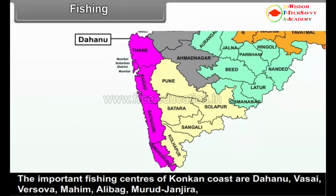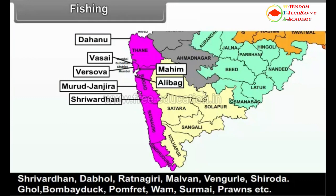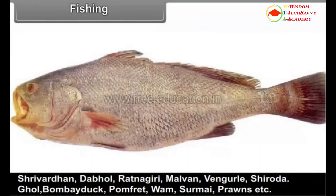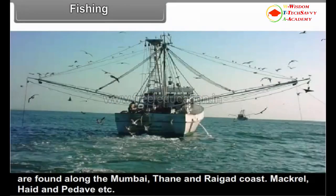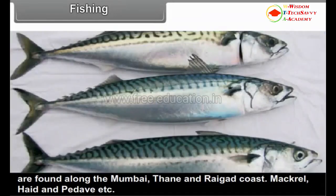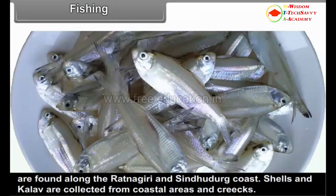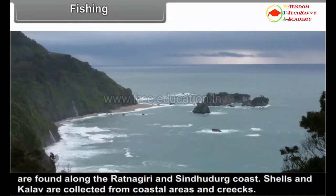The important fishing centers of Konkan coast are Dhanu, Vasai, Varsova, Mahim, Alibag, Murud, Janjira, Shrivardhan, Dabhol, Ratnagiri, Malwan, Vengurla, and Shiroda. Ghol, Bombay Duck, Pomfret, Waam, Surmai, Prawns, etc. are found along the Mumbai, Thane and Raigad coast. Mackerel, Hidie and Pedave, etc. are found along the Ratnagiri and Sindhudurg coast. Shells and Kala are collected from coastal areas and creeks.